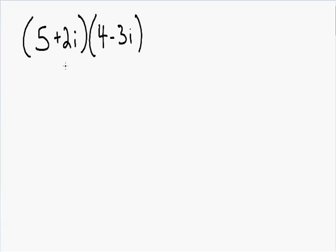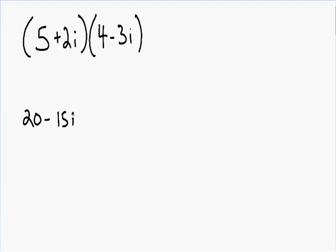Here we have 5 plus 2i being multiplied by 4 minus 3i, so we want to use the FOIL method. First I'm going to multiply 5 times 4, which is equal to 20. Now I'm going to multiply 5 times negative 3i, which is equal to negative 15i. Now I can multiply positive 2i times positive 4, which gives me positive 8i. And if I multiply positive 2i times negative 3i, that's going to give me negative 6i squared.